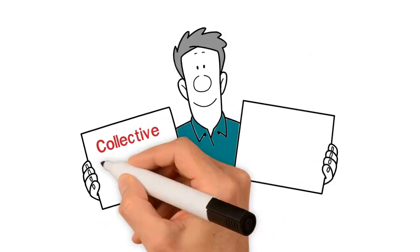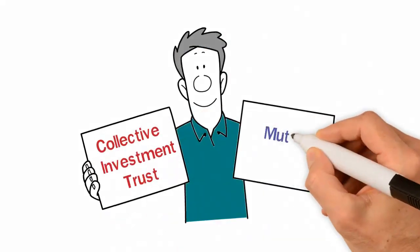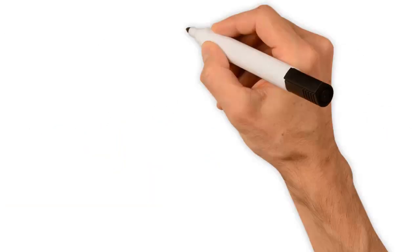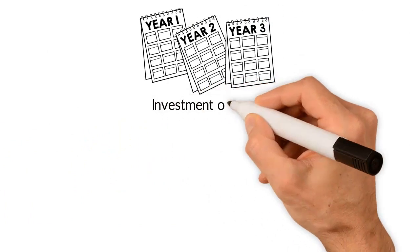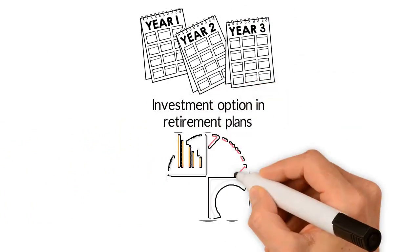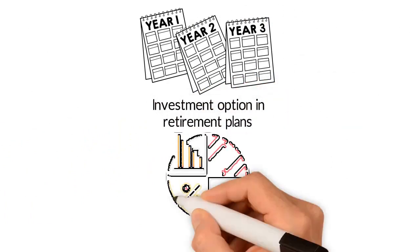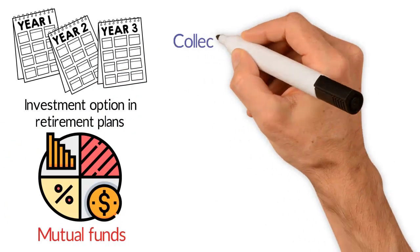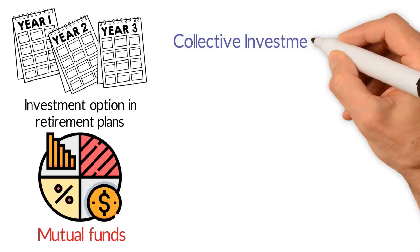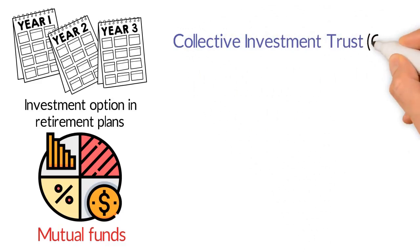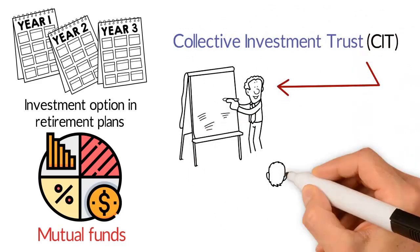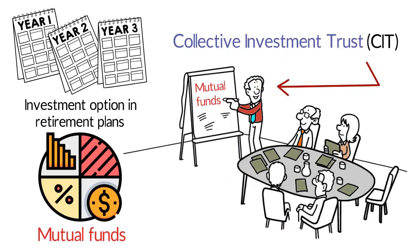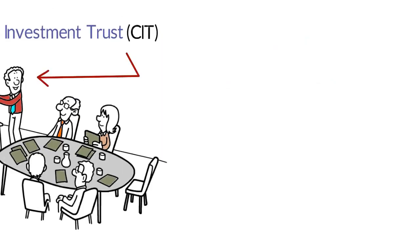Difference between a Collective Investment Trust and a Mutual Fund. For many years, the most common investment option in retirement plans has been mutual funds. Collective Investment Trust, or CIT, options have begun to challenge the dominance of mutual funds in retirement plans.